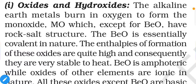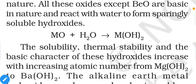Consider the example of HCl: hydrogen chloride is actually a covalent compound, but we know it is a strong acid, so it releases H⁺. If it releases H⁺, that means it has ionic nature, yet it is a covalent compound. So we can say HCl is amphoteric — it has both ionic nature and covalent nature. All oxides except BeO are basic in nature and react with water to form sparingly soluble hydroxides.